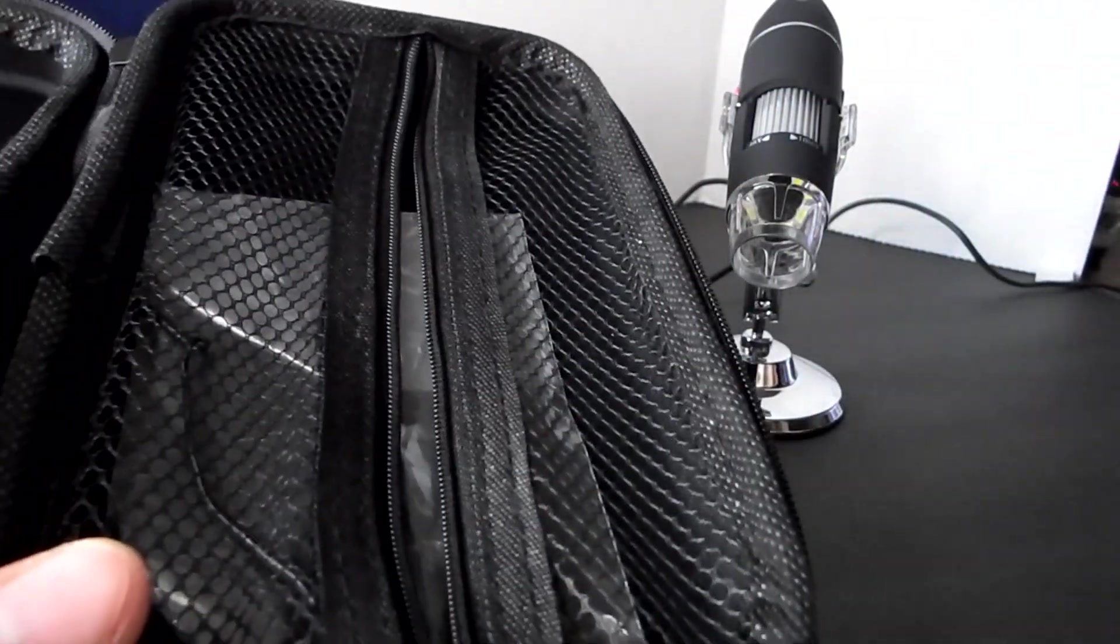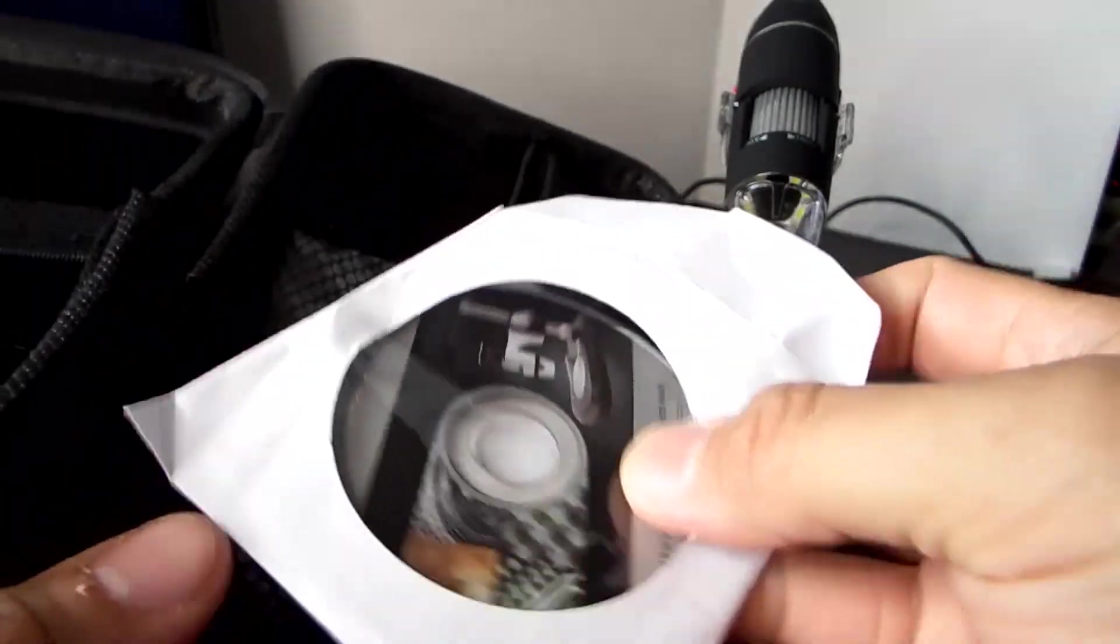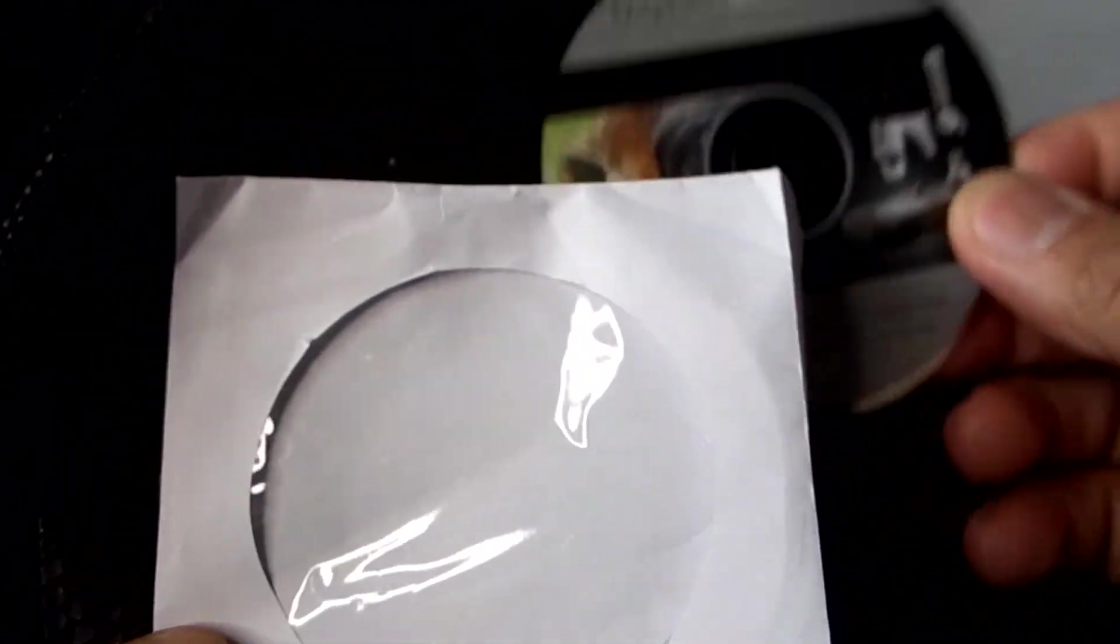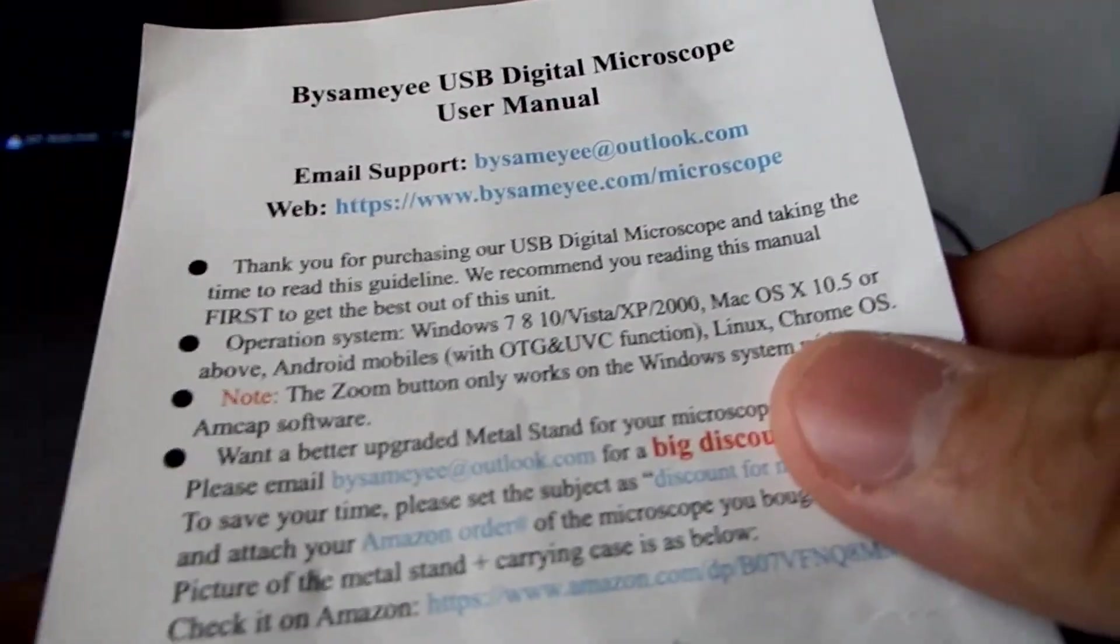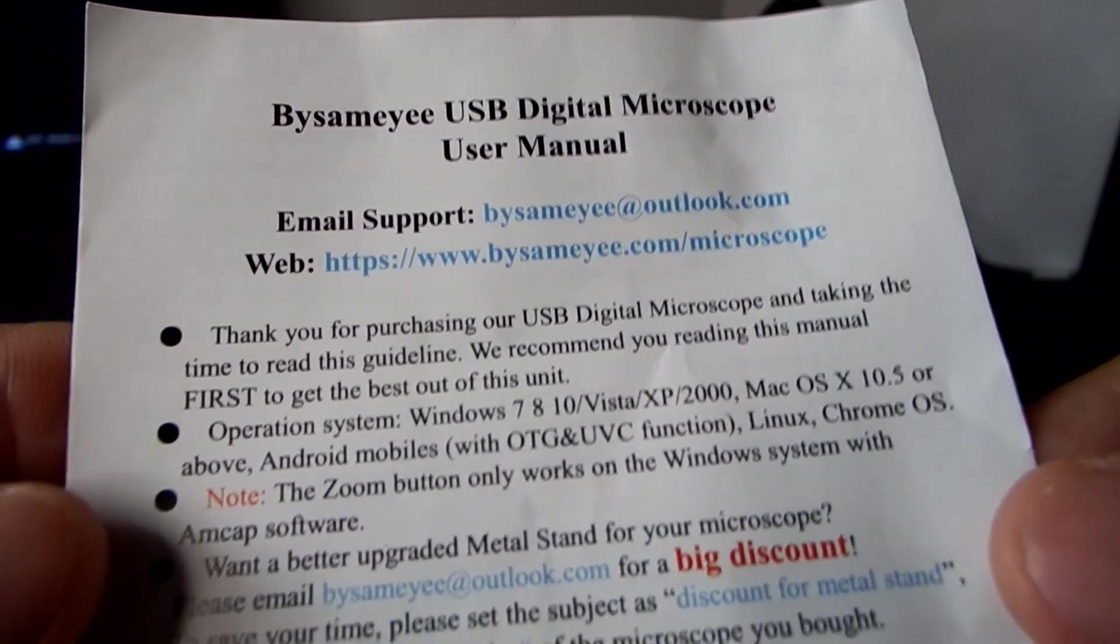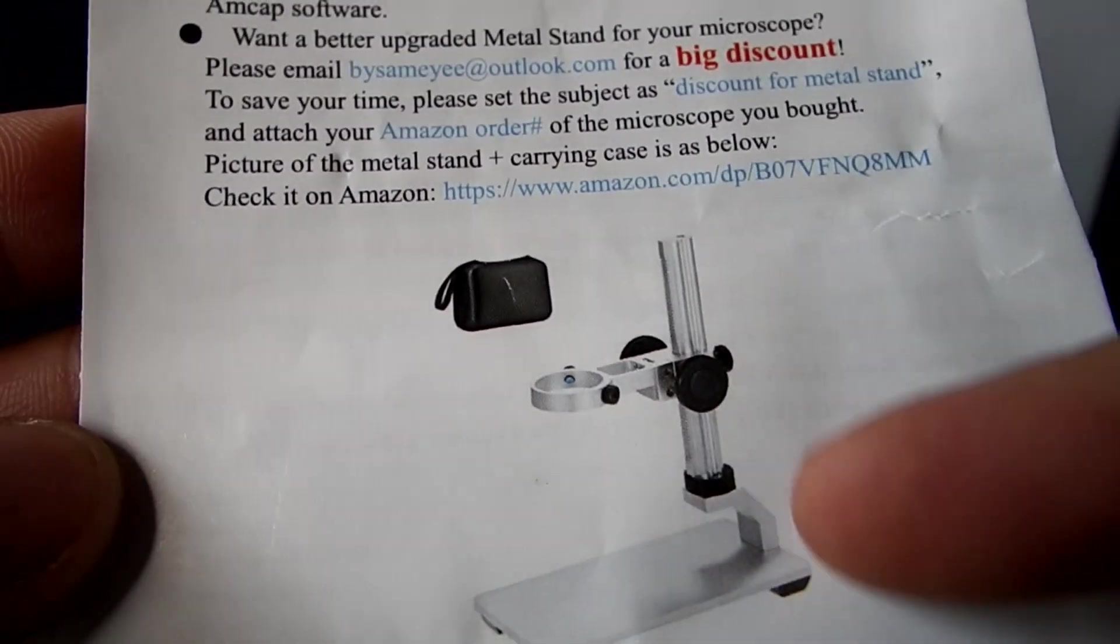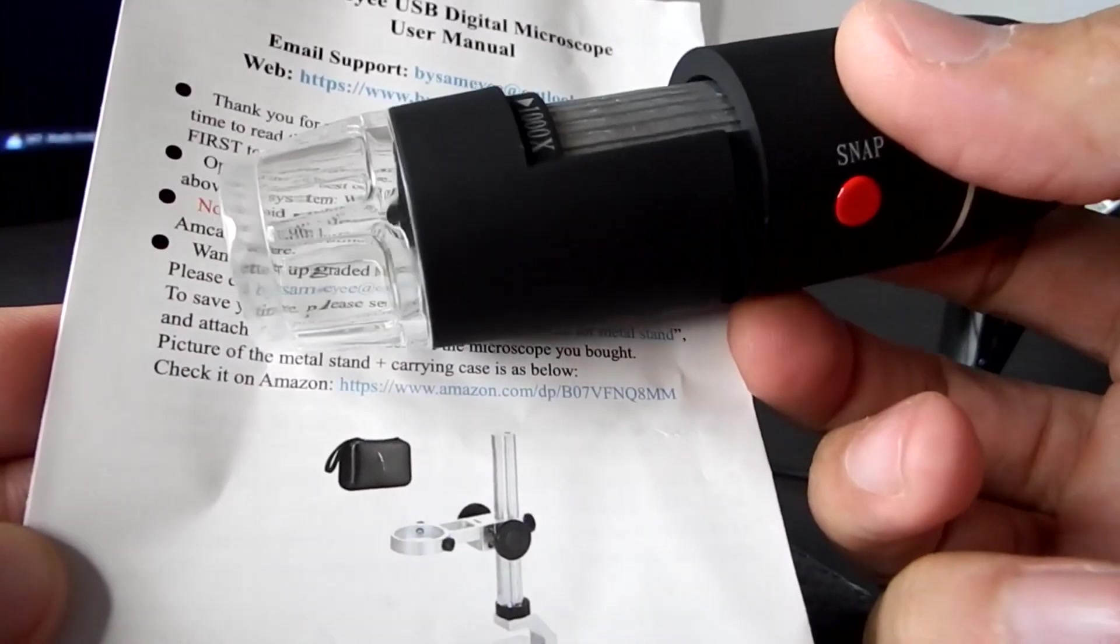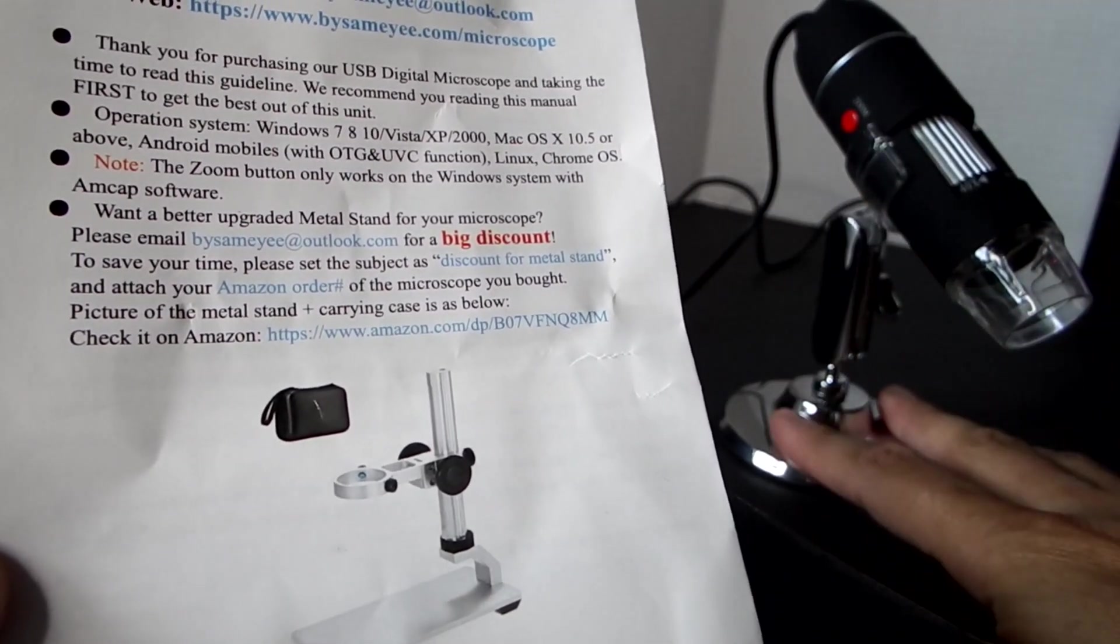It comes with a backup installation disk, it's a mini disk. It comes with the instruction manual, it's a user manual that gives you the email if you want to check more into it. It gives you a discount to get an upgraded aluminum stand. This would be a much better stand, you can order this with the camera for just over $40. I've seen it on Amazon, I'll post it at the end if you're not satisfied with this standard stand.